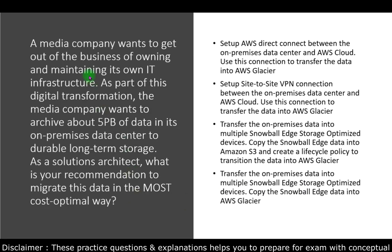Question two: a media company wants to archive about five petabytes of data from its on-premises data center to durable long-term storage. As a solution architect, what is the most cost-optimal way to migrate this data? Option one — set up AWS Direct Connect between on-premises and AWS and use it to transfer data into AWS Glacier — requires huge investment and takes more than a month to set up, so it is not the correct answer here.